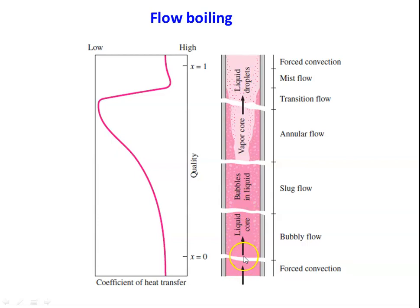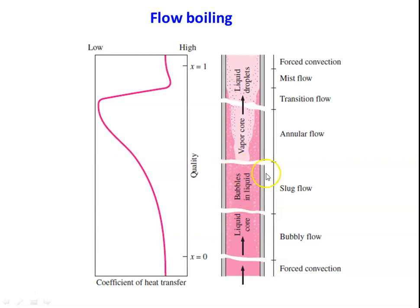As water is heated and moves upward, bubble formation begins on the pipe wall surface. Bubbles flow along with the liquid — this is called bubbly flow. Further upward, the number of bubbles increases — this is called slug flow, or two-phase flow, where both vapour bubbles and liquid are present. The theory for two-phase flow is totally different, which is why we do not solve problems on flow boiling — we solve problems only on nucleate pool boiling.